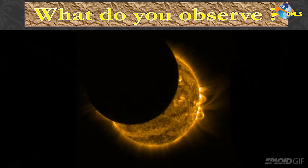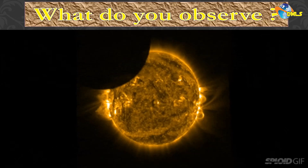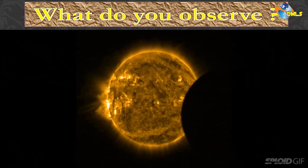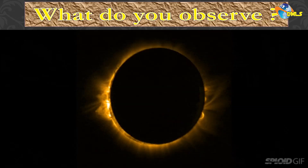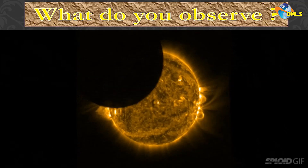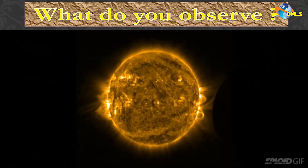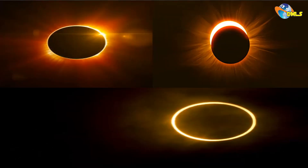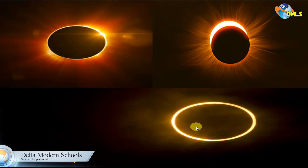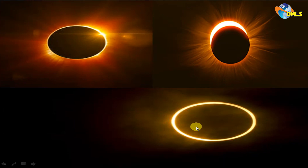Now I want you to observe this picture and tell me what you observe. I observe that the sun is shown and the moon is moving across the sun. I observe that the moon can block part of the sun, and in some cases it can block all of the sun. So I can see part of the sun in one case, and in another case the sun is completely blocked. In a third case, I can see the sun as a glowing ring. So I have three types of solar eclipse.